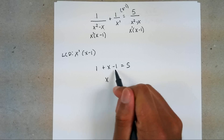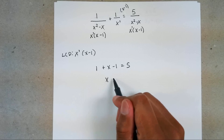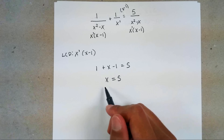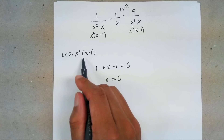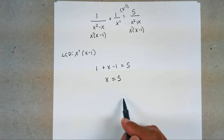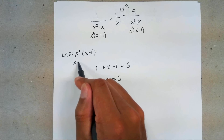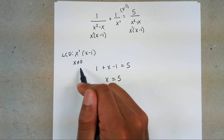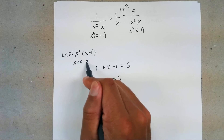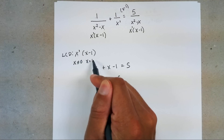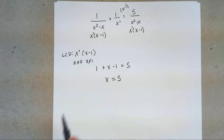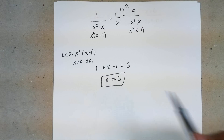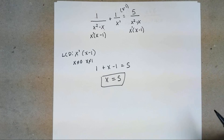Solve for X. 1 plus X minus 1 — the 1 and negative 1 cancel — leaves X equals 5. Now before boxing in this answer, make sure your restriction points are not 5. X on the outside means X cannot equal 0. X minus 1 gives X equals 1, so X cannot equal 1. Since neither 0 nor 1 matches your answer, X equals 5 is your final answer.